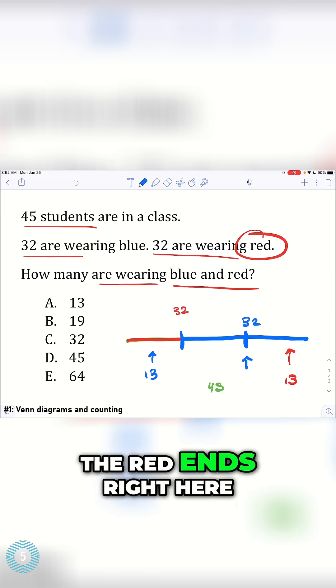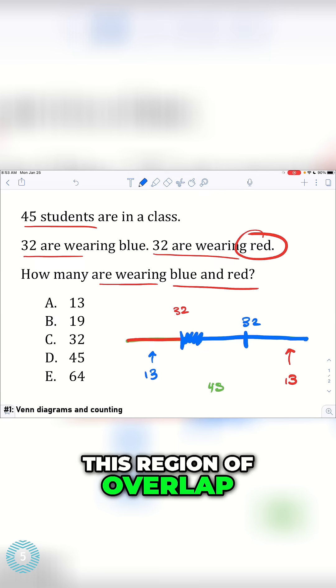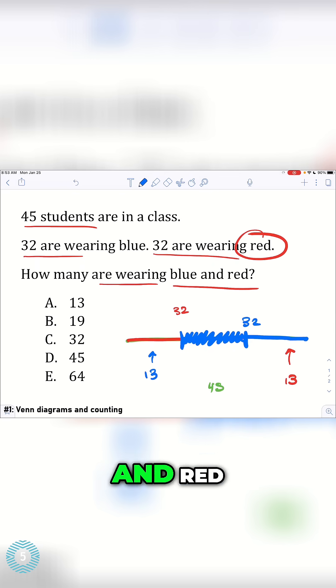I have this region of overlap, the red ends right here. This region of overlap is wearing both blue and red. Now all we need to do is find how wide this region of overlap is. How do we figure that out?